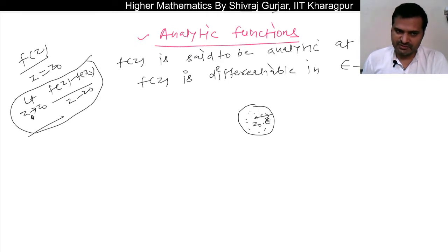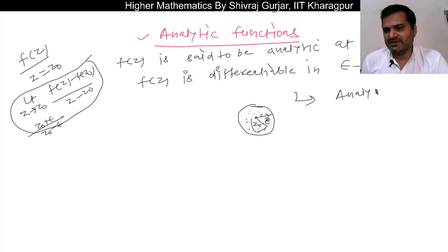This limit should exist for z equals z₀, z tends to z₀, also z tends to z₀ plus epsilon, z₀ minus epsilon, and all points which lie in this radius. If the function is differentiable at all these points, then we say that f(z) is analytic at that point. So basically, to know analyticity at one point, we have to check differentiability in the entire neighborhood of that point.